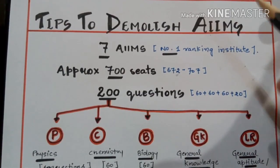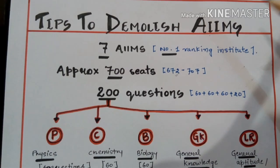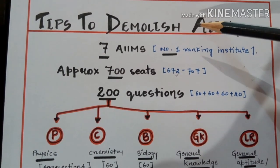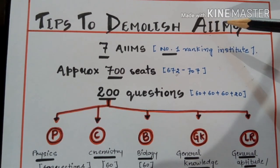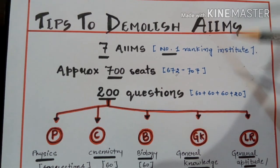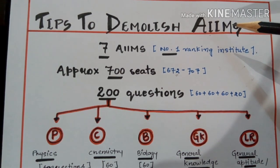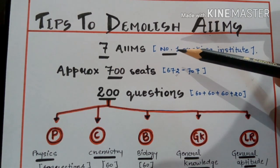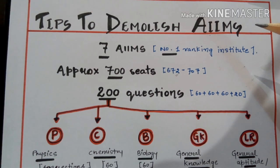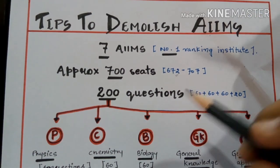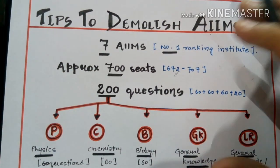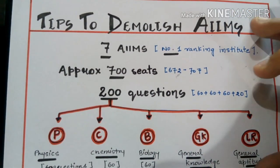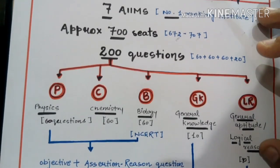Hello guys, welcome back to another video from Vipin Sharma Biology Tutorials. Today we are talking about tips and strategies to demolish the AIIMS examination. AIIMS — All India Institute of Medical Science — is ranked among the top medical institutes of India. AIIMS Delhi is India's number one institute, and it contains approximately 700 seats this year, increased from 672 last year.